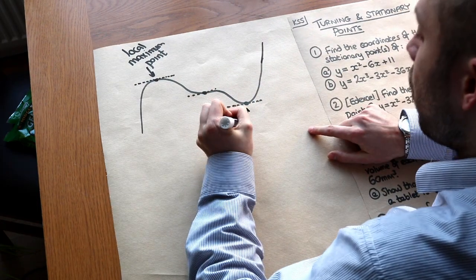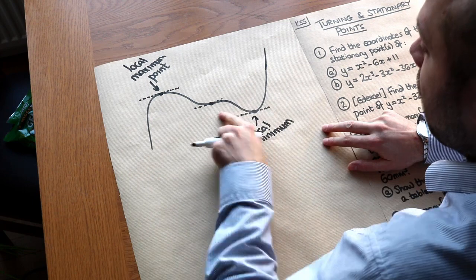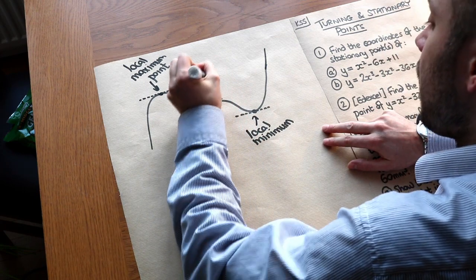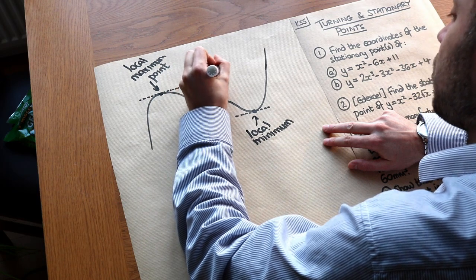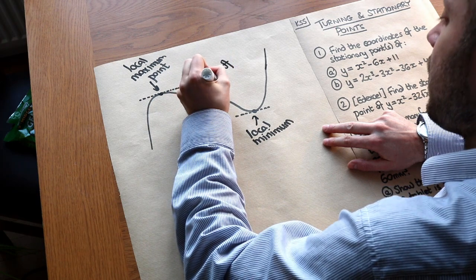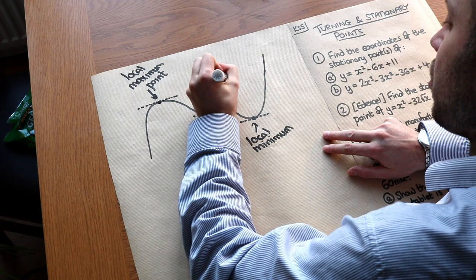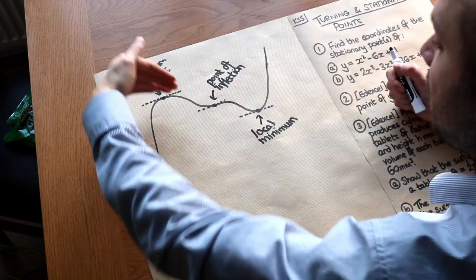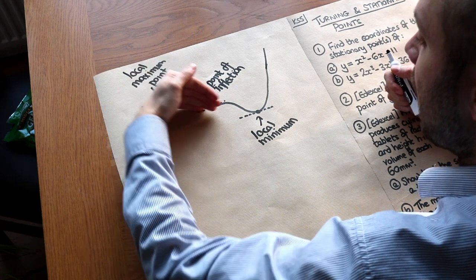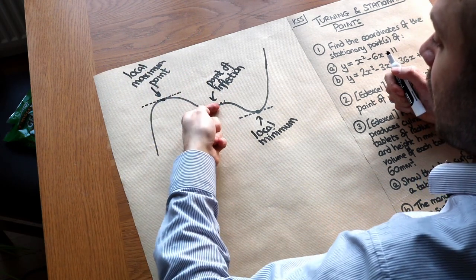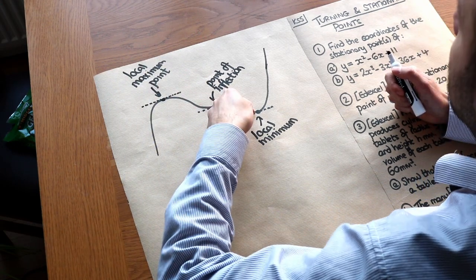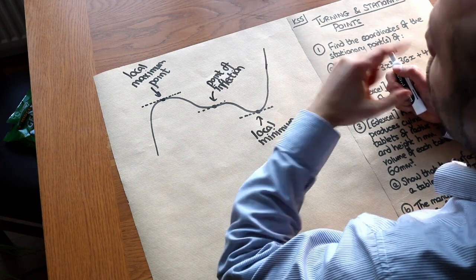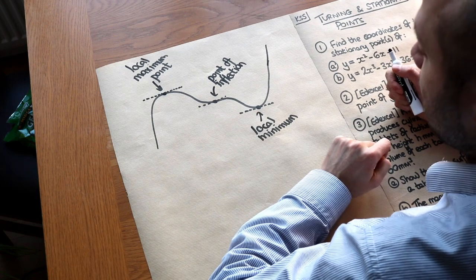Here we have a local minimum point. And for this point where the gradient is zero, that is known as a point of inflection. The definition of a point of inflection is where the line curves from one way to curving the other way. The curve is swerving left here, but after that point of inflection the curve is swerving right. That point where it changes from swerving left to swerving right, or vice versa, is known as a point of inflection.